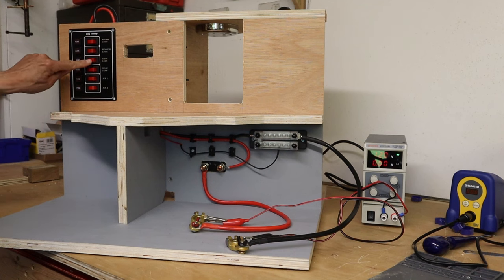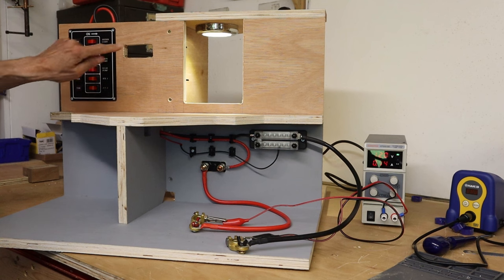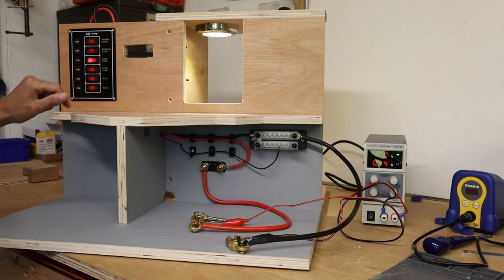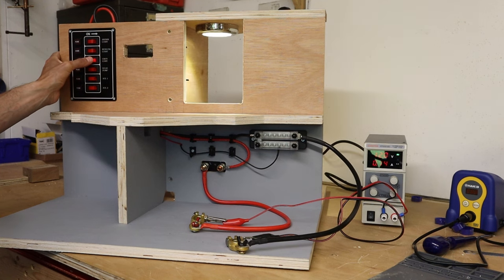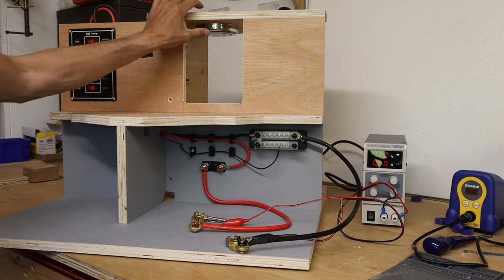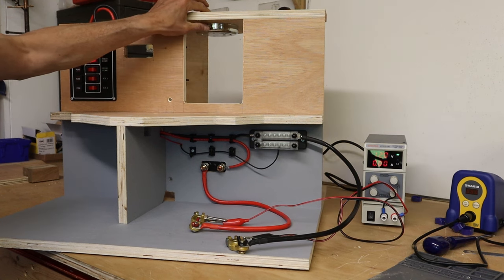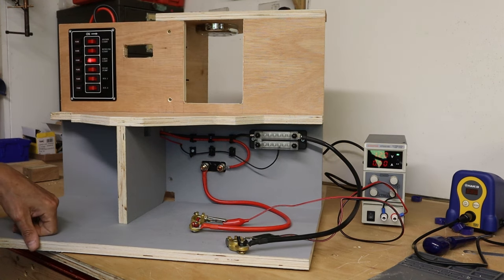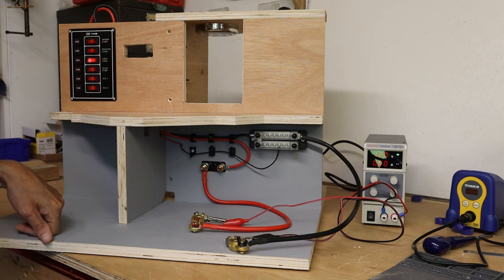So we now got 12 volts coming to the system. And the moment of truth, if I turn on the cabin light switch, yes, we have light. So we can turn that off here. We can also turn this, it has a switch on the light itself. So happy with that. We've got the first component installed.